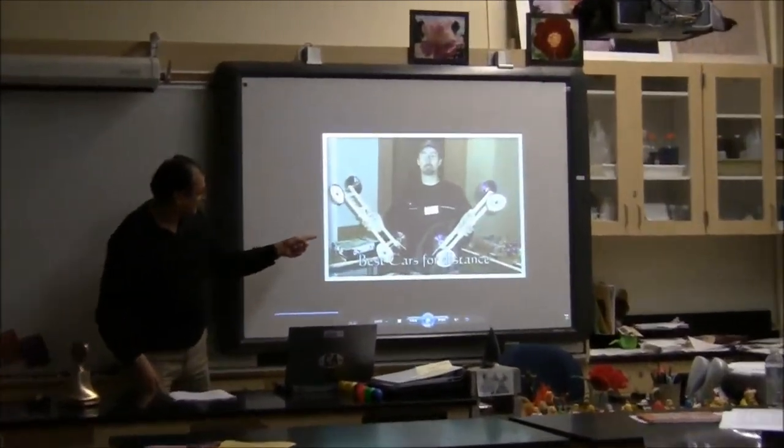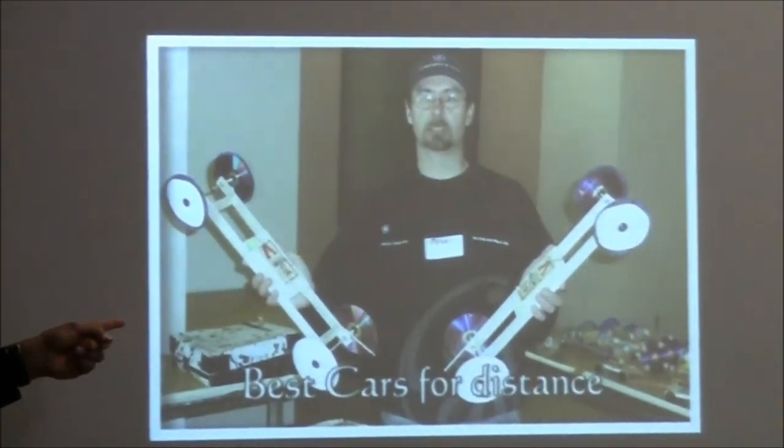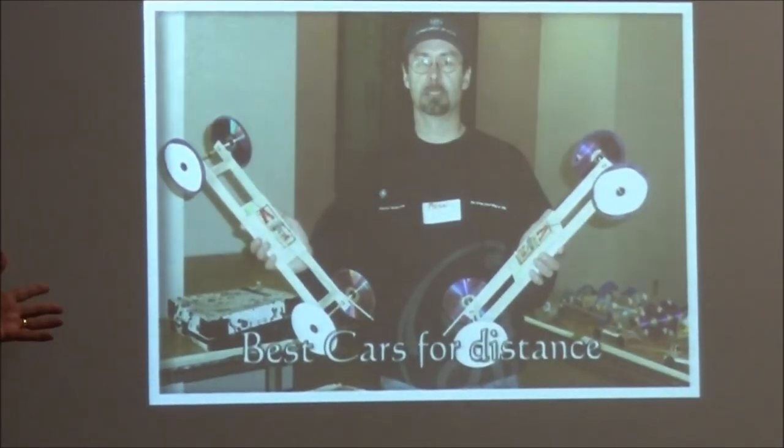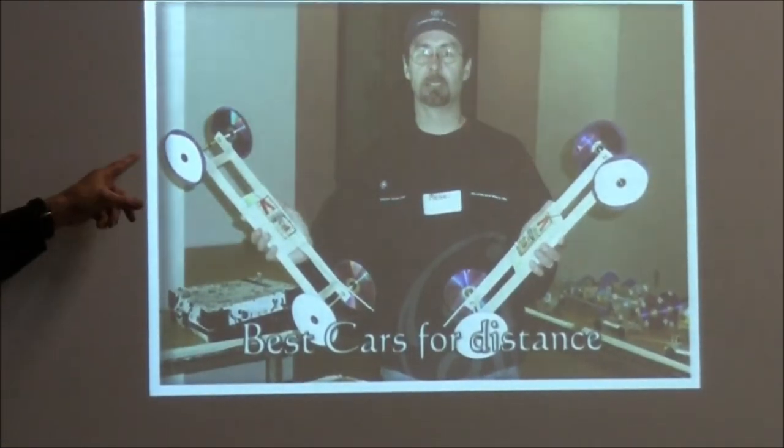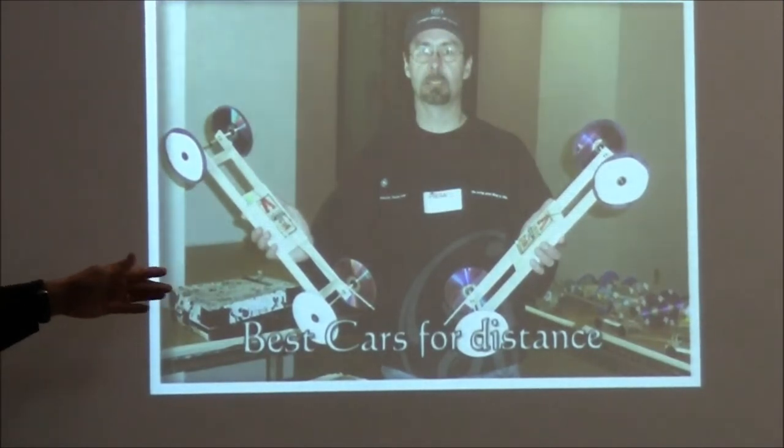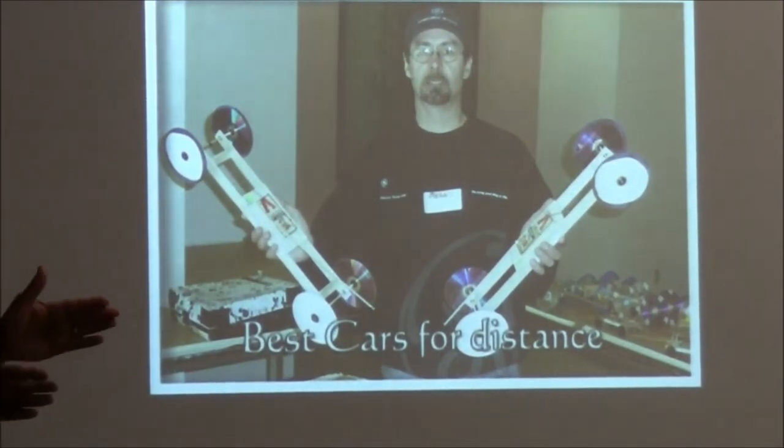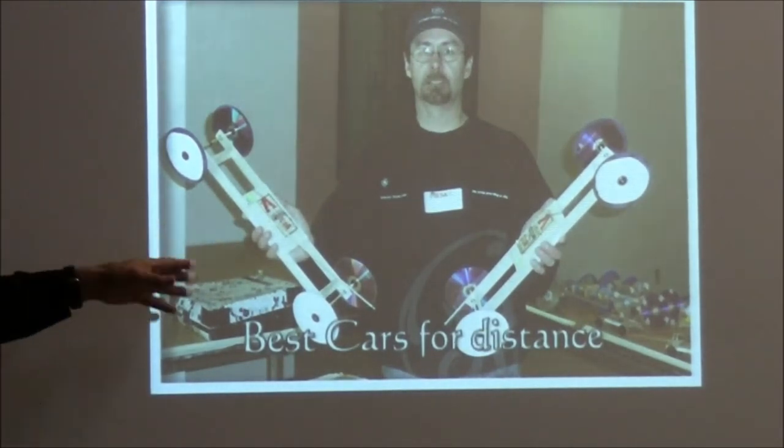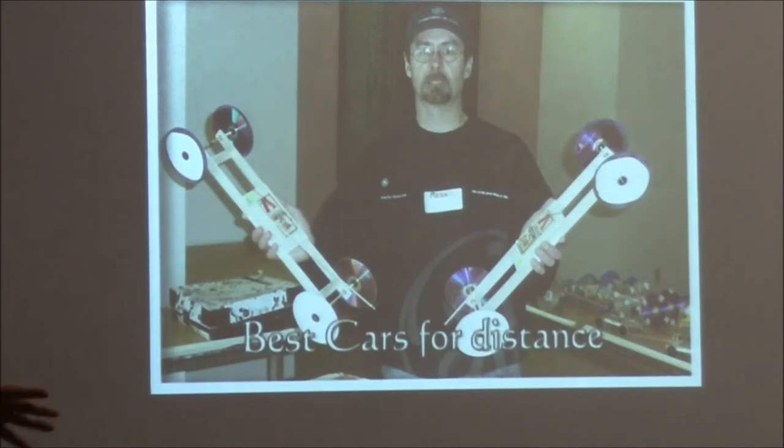So this is where two cars did very well on the distance. They were very large as you can see. They had very large wheels. And I think the fact that they were so long helped them to go straight. If you have the wheels closer together, then any little deviation from making it, it's gonna go sideways. It gives it better stability.